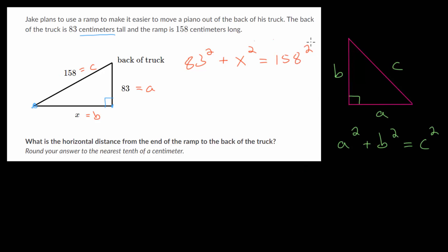If you use a calculator or just multiply these out by hand, 83 squared, 83 times 83 is 6,889. And if we square 158, we get 24,964.